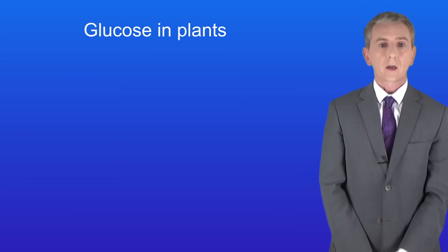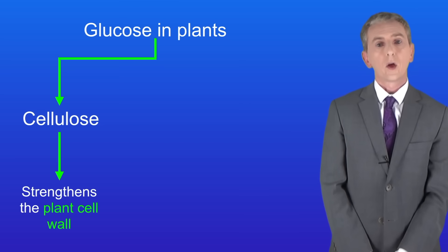For example, in the plant cell glucose is converted into cellulose which strengthens the plant cell wall. Also in plant cells glucose is converted into starch which is a storage form of glucose.